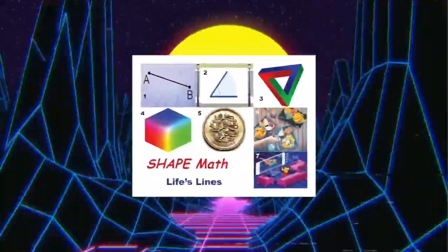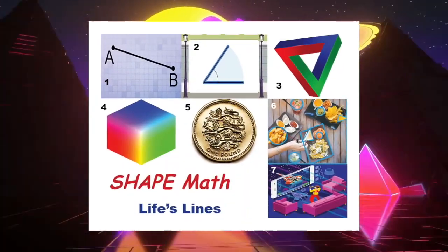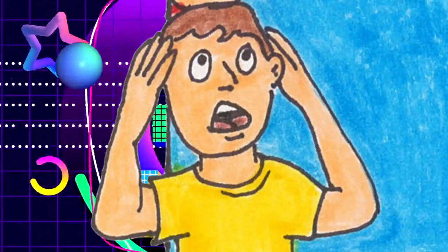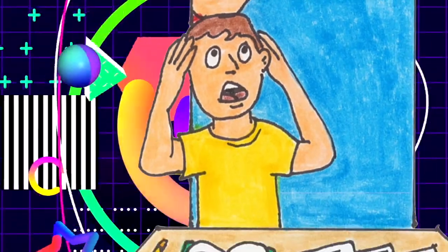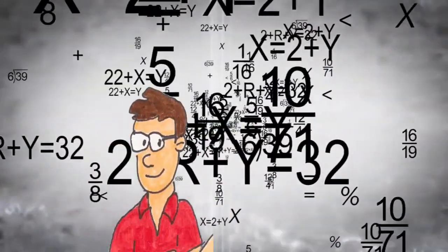Shape Math helps us understand our real and cyber worlds in seven steps. My name is Kai. I'm in a bad shape. I do not understand the subject of Shape Math. Dad helps.